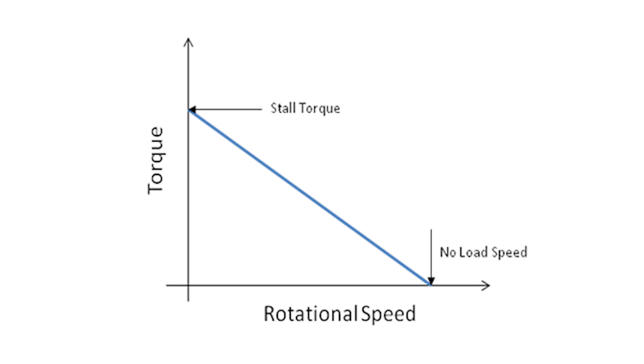The torque speed curve begins at the y-axis crossing, where torque is zero. This is the stall torque, the maximum torque when the motor is running at nominal voltage.